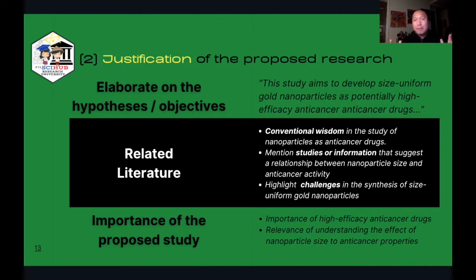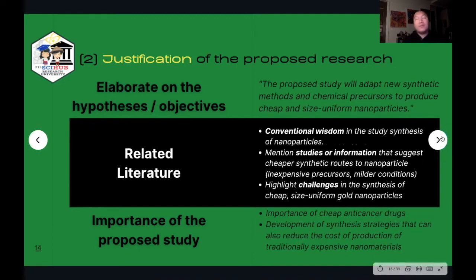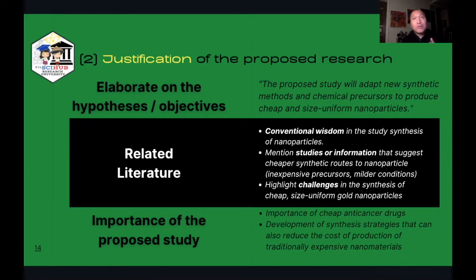It's going to be very difficult to write up an entire page with four to six paragraphs to show as examples, but this is the framework of a justification section for a specific hypothesis or program objective. The second objective of the gold nanoparticle case study is that in addition to making size-uniform nanoparticles, we have to be able to produce them in a cost-effective manner — meaning we have to make these materials cheap.